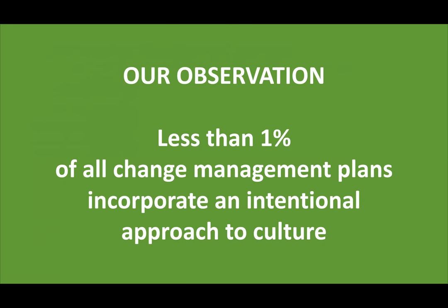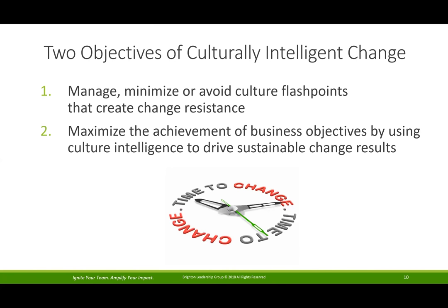For transformation changes, some practitioners get to do all of the change management, but other projects are reduced to just training and communications. Unfortunately, we really don't get to do full change management all the time. The objectives whenever we're working on culturally intelligent change are twofold: managing, minimizing, or avoiding culture flashpoints — those things creating resistance in our change projects — and maximizing the outcomes and results. Later in this webinar we'll talk about a change project where culture created resistance — an example of a culture flashpoint that got mislabeled by the project team.